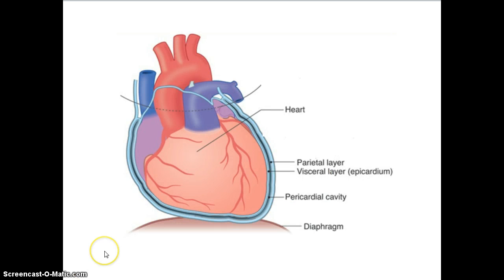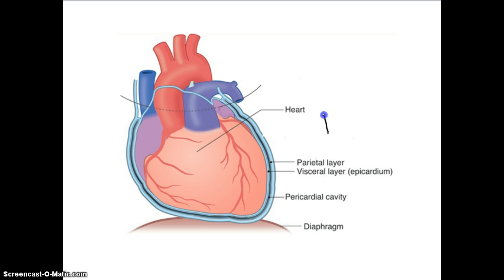Now I want to talk about the layers of the heart. First, I want to mention that the heart is enclosed within a sac called the pericardium. The pericardium is a double-walled sac, meaning there is an outer layer and an inner layer.